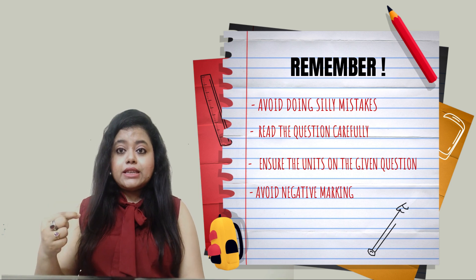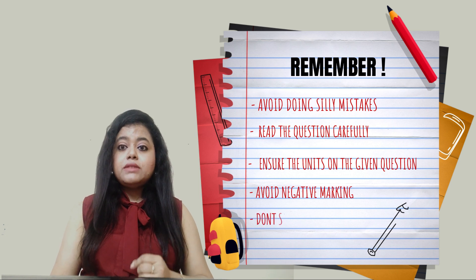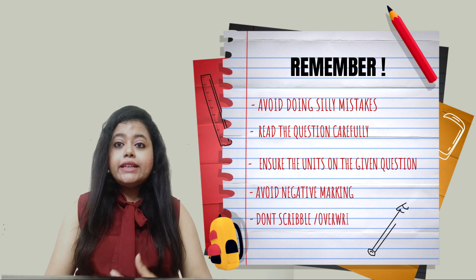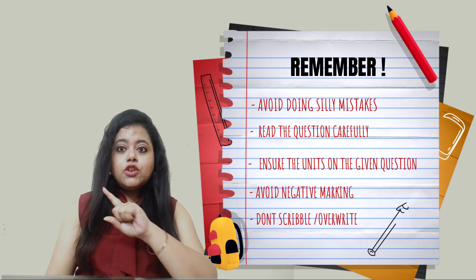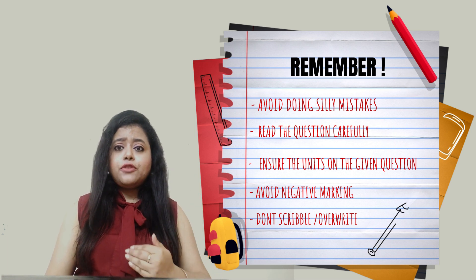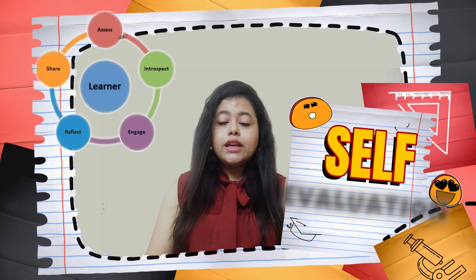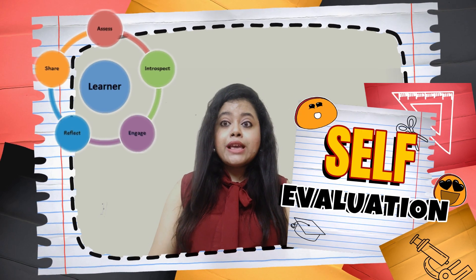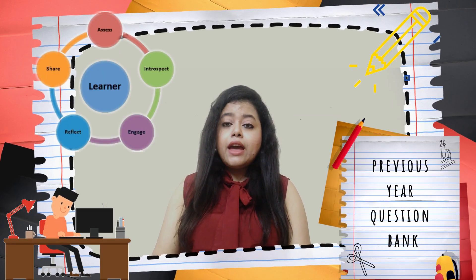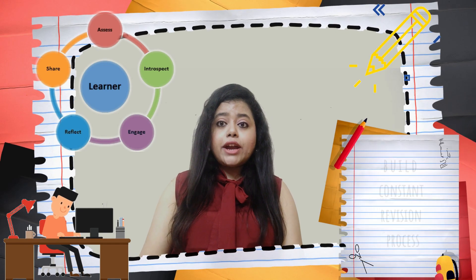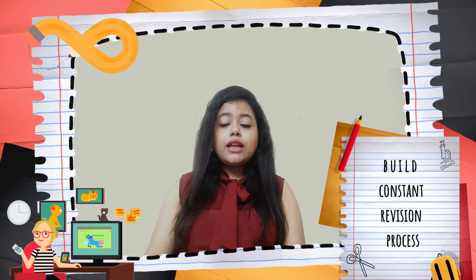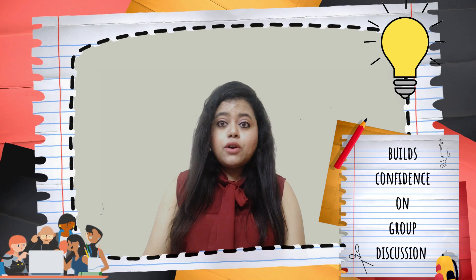When solving problems, you will be given a rough sheet. Do not overwrite on it — if you make a mistake, cancel it and write it freshly, as overwriting increases the chance of errors. For self-evaluation, review your practice modules and previous year question bank results. Whenever you get something wrong, revise that formula immediately — do not leave it for later, because addressing it on the spot helps it stick in your memory.